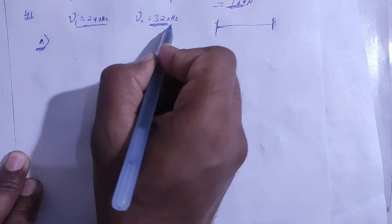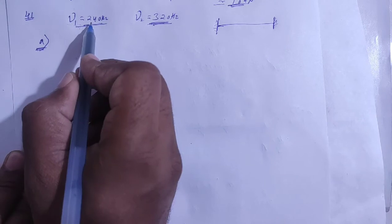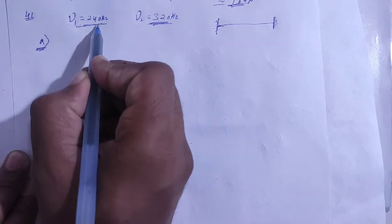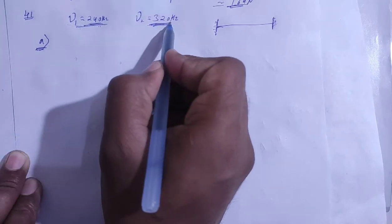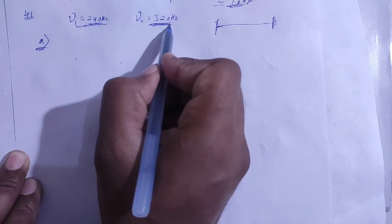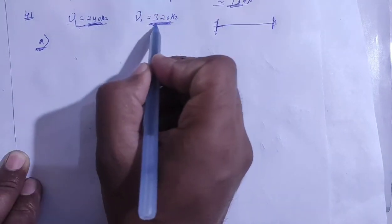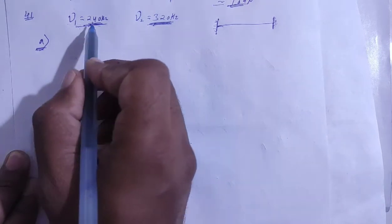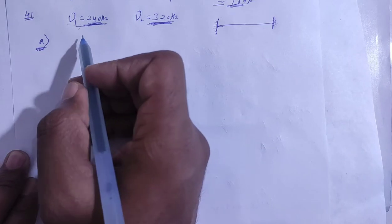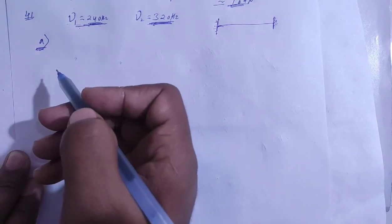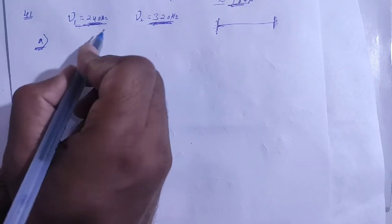The fundamental frequency must be a factor of both resonance frequencies. If the fundamental is 1 hertz, then 240 and 320 are the 240th and 320th resonances. If fundamental is 10, then 240 is the 24th harmonic and 320 is the 32nd harmonic. Possible fundamental values are 1, 2, 5, 10, 20. For maximum fundamental frequency, we need to find HCF of 240 and 320.